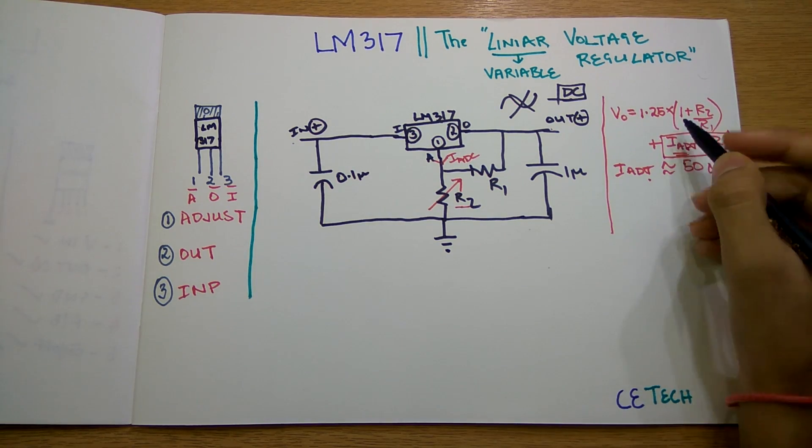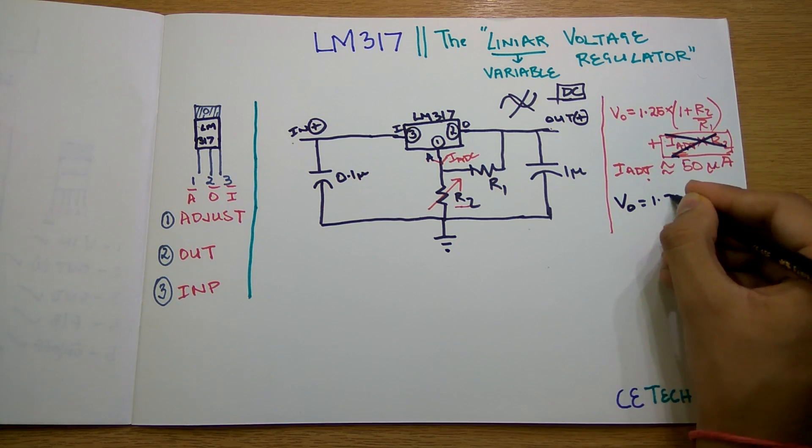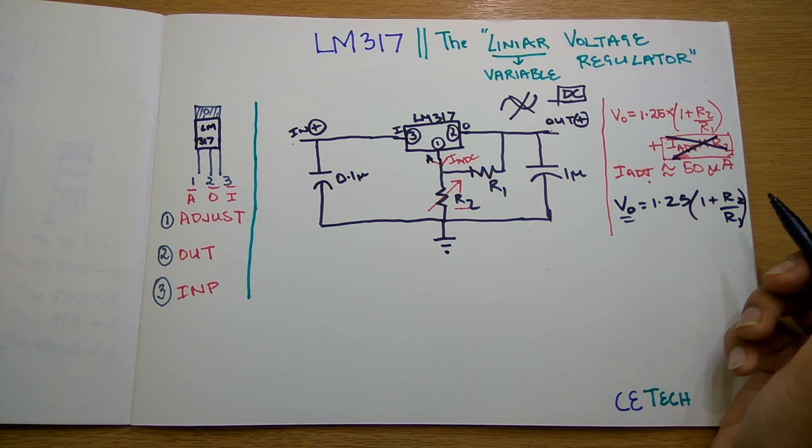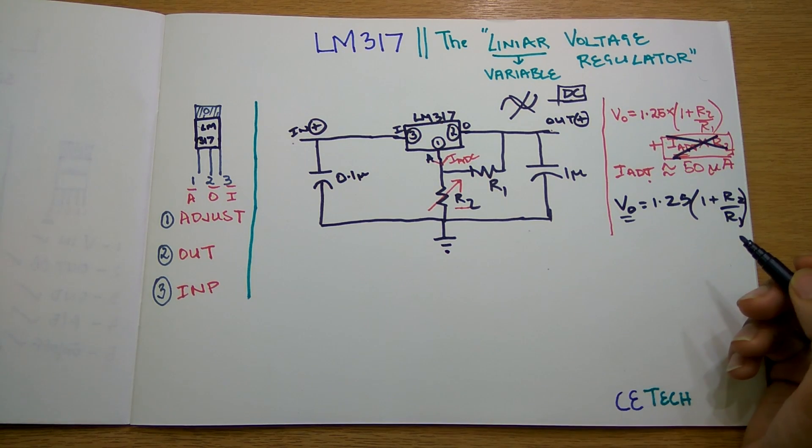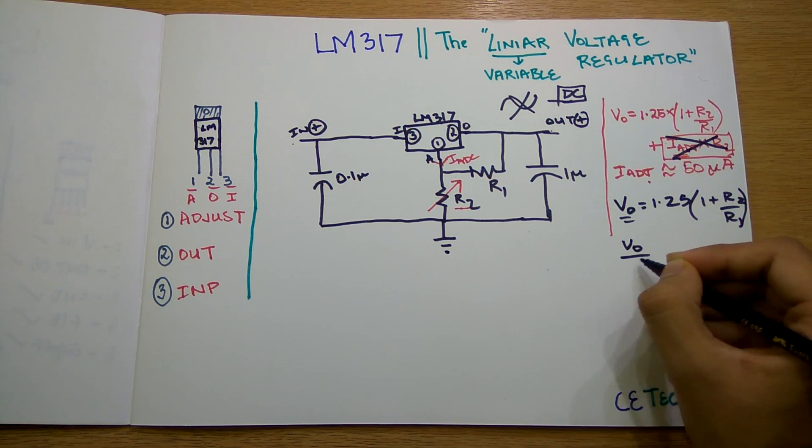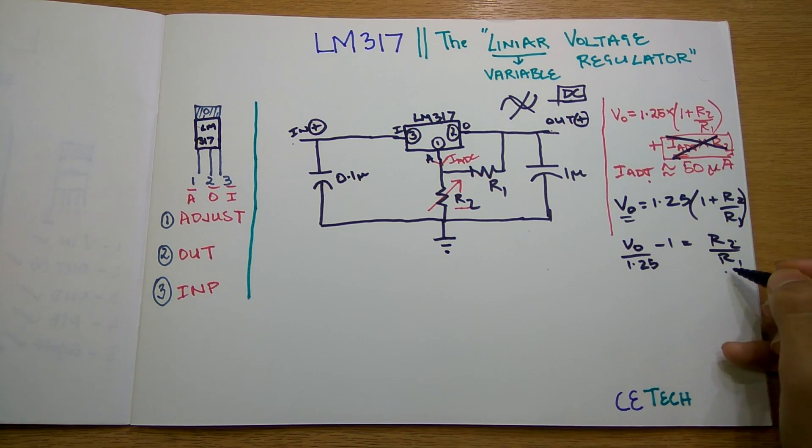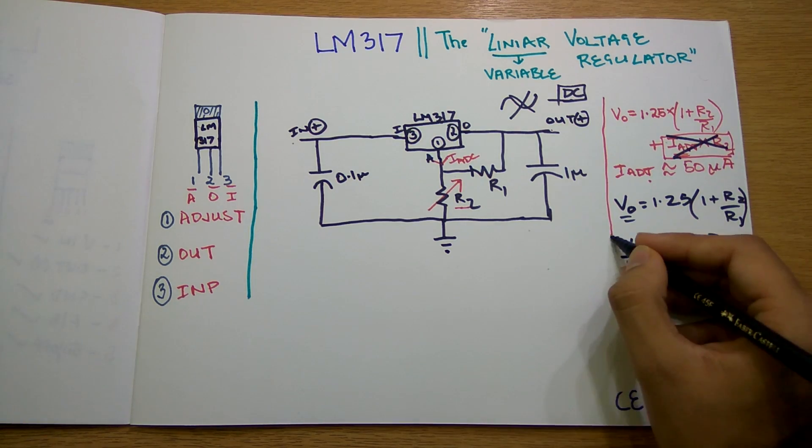Our net equation becomes Vout = 1.25 × (1 + R2/R1). For calculating the Vout, if we want to fix a Vout we can cross multiply. Vout/1.25 - 1 = R2/R1. We can put in arbitrary values of R1 and change R2, so this ratio must be fixed.